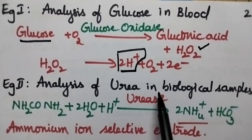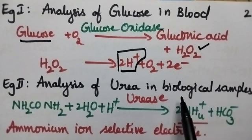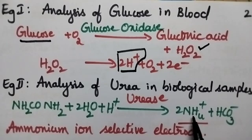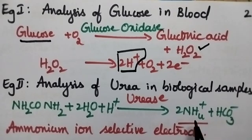Similarly, urea in biological samples can be estimated. Initially, urea present in biological samples undergoes hydrolysis, resulting in the formation of ammonium ions and bicarbonate. Once we measure the concentration of ammonium ions, it is possible to know the concentration of urea in the biological samples. For that purpose, an ammonium ion selective electrode is used.